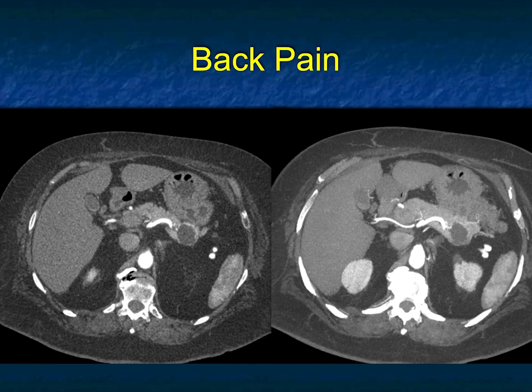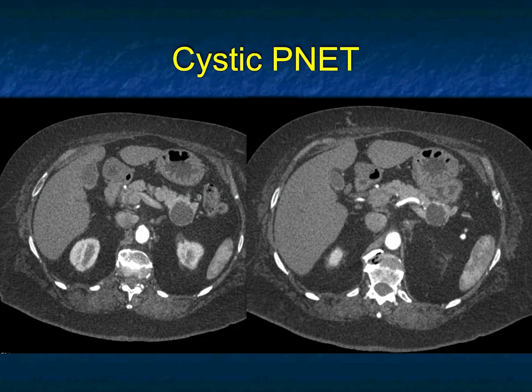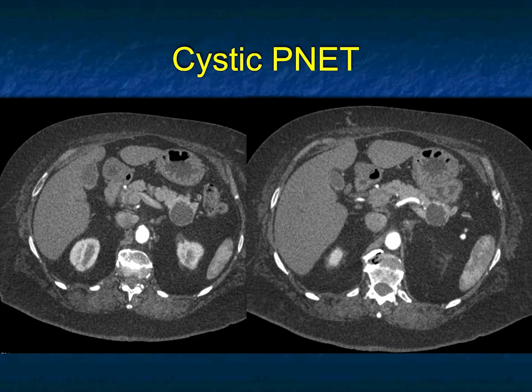Another patient, same location — a cystic lesion with enhancement. It's not an IPMN; there's no dilated duct. You could think about an MCN, but the patient was older and male. This was also a neuroendocrine tumor — you see the enhancement here as well. Cystic neuroendocrine tumors are sometimes small and obstruct the pancreatic duct, but often they look just like this and can be mistaken for IPMNs. Remember, side-branch IPMNs typically communicate with the duct; there's no communication in this case.